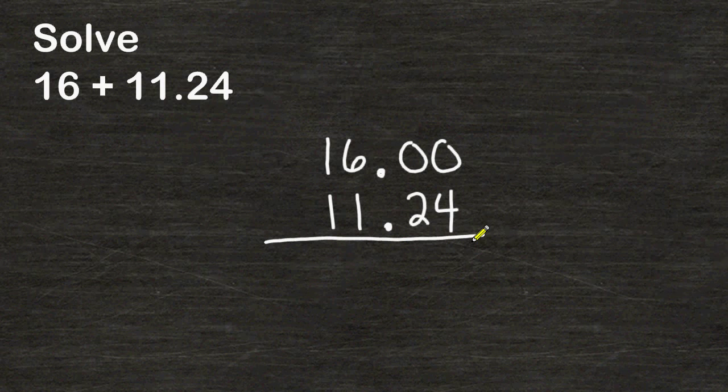And then we just add all of the columns together. In this column, we have a total of 4 hundredths. In this column, we have a total of 2 tenths. Then we drop our decimal point. In this column, we have a total of 7 ones. In this column, we have a total of 2 tens.